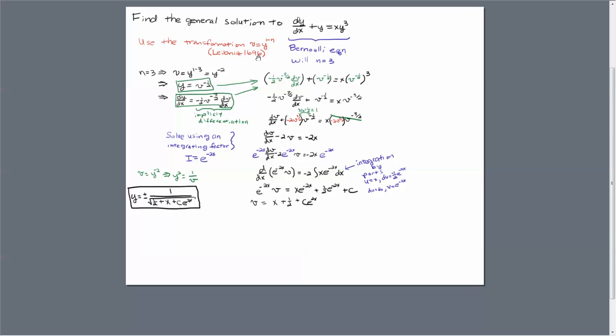With this transformation, v equals y to the 1 minus n, when the equation is in this form. Okay, good luck.